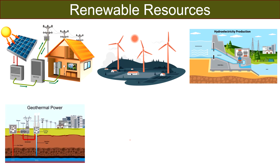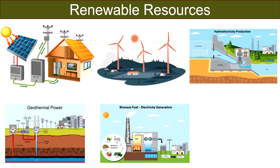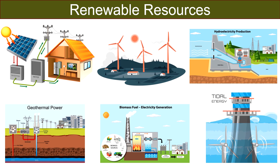Hydropower, or hydroelectric power, is generated by the flow of water in rivers or the falling of water from a height. Geothermal energy is derived from the heat within the Earth's interior and can be used for electricity generation or heating applications. Biomass energy is obtained from organic materials such as plants and waste and can be used for heating, electricity generation, or as a fuel source. Tidal and wave energy are generated by the movement of tides and waves in oceans and seas.